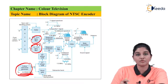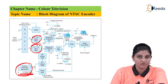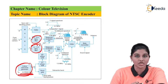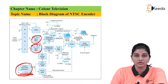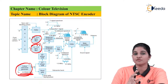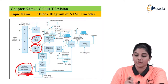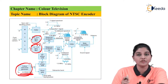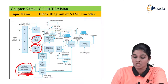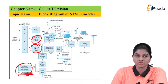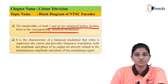The color subcarrier generator provides the color subcarrier frequency, which is phase shifted by 57 degrees in the clockwise direction, and then again phase shifted by 90 degrees before being applied to the balance modulator. Because of this, there is a phase shift of 90 degrees between the I and Q signals. If there is any interference between the luminance signal and the high frequency video signal, that interference gets suppressed by using the color subcarrier. That is why the color subcarrier is required in the NTSC encoder.